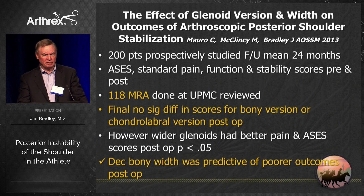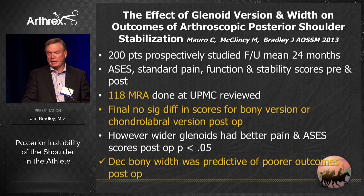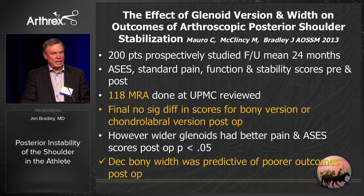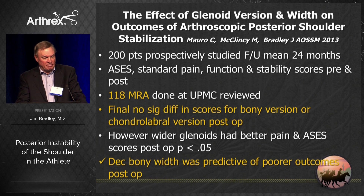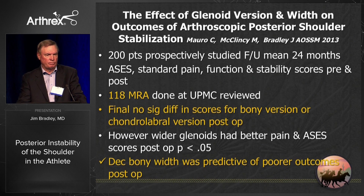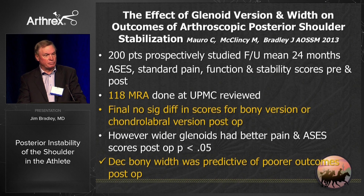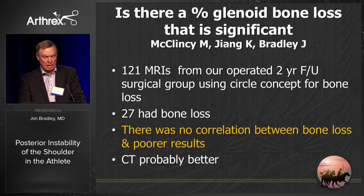The study was the effect of glenoid version and width on outcomes of arthroscopic posterior stabilization. We took 200 patients prospectively followed out two years and had all their outcomes. Of those, 118 had MRIs done at our institution. We found no significant difference in bony or chondrolabral outcomes based on version problems — there just wasn't a problem after we fixed them. However, decreased bony width of the glenoid was a predictor of poorer outcomes postoperatively.